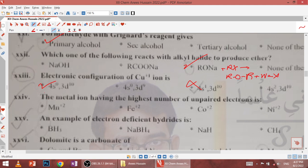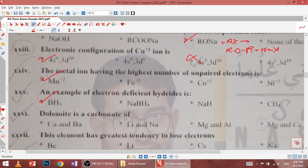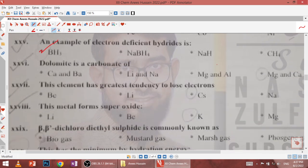Twenty-fourth, the metal ion having the highest number of unpaired electrons is Mn+2. Twenty-fifth, an example of electron deficient hydrides is BH3. Twenty-sixth, dolomite is the carbonate of calcium and magnesium.